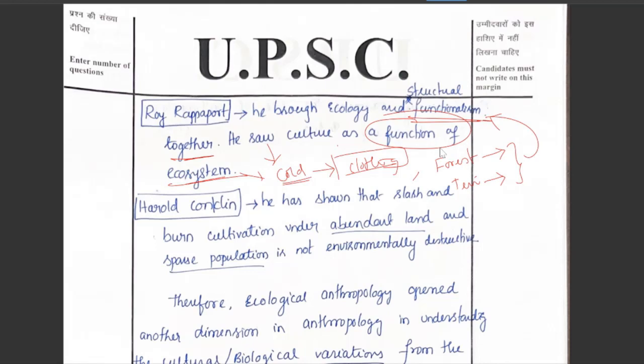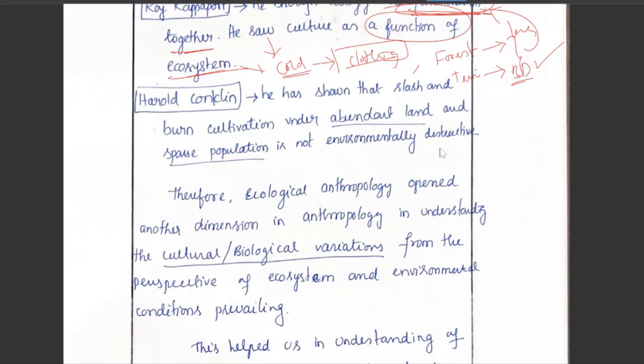For example, in forests, you need a good sense of smell rather than vision, so there is a long snout. When moving to terrestrial locations, smell becomes less significant but better 3D binocular vision is needed, so there is a compromise. This shows how functions are satisfied according to the ecosystem — that is how Rappaport linked culture to ecology.